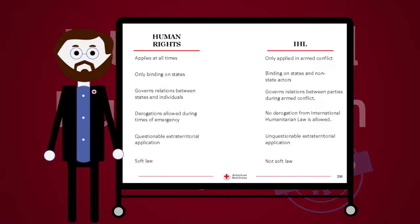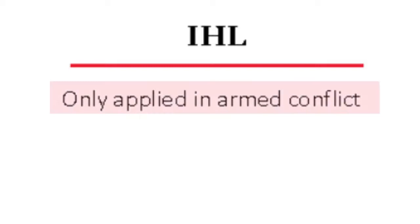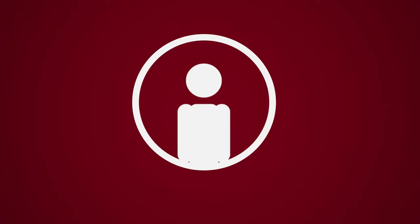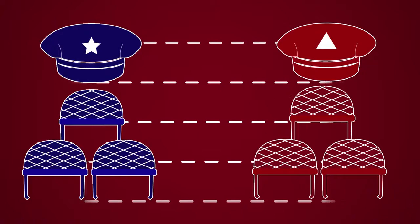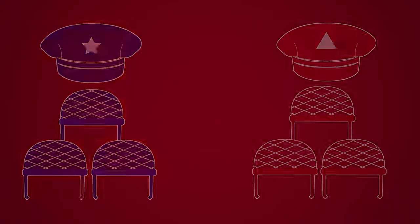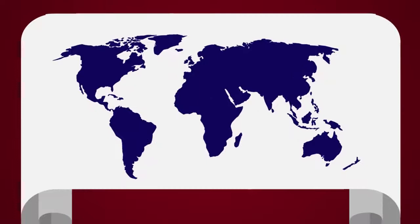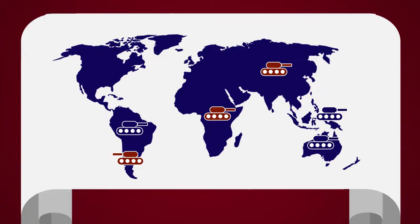IHL exists to govern the relations between parties to an armed conflict. While the purpose behind it is to protect the individual, it seeks to do so by regulating how nations or parties to the armed conflict treat each other when fighting. IHL regulates the parties to the armed conflict, while it remains the responsibility of the parties to the armed conflict to ensure their soldiers comply with IHL. IHL is binding on nations that fight each other, on nations which fight an armed group within their own borders, and in some situations binding on two or more armed groups who are fighting within the borders of a nation even if the government forces of that nation are not involved in the fighting.